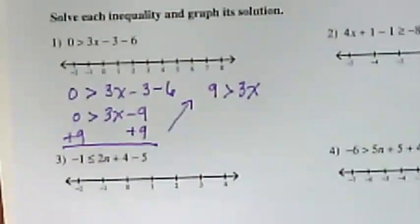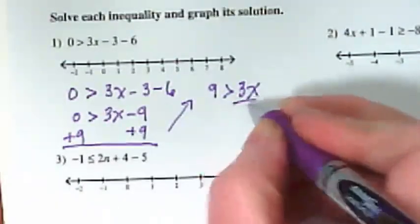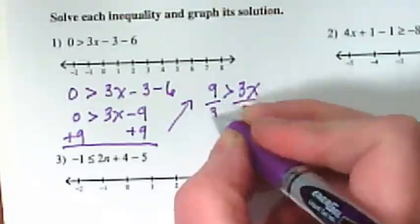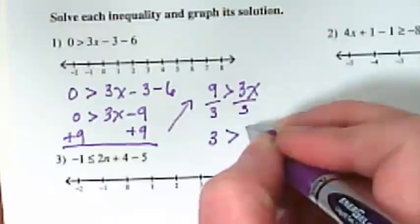So step six, cancel the coefficient. The number that's in front or under the variable using multiplication or division. This is where we're trying to make our positive invisible one. So what do we need to get rid of here to cancel? And we're going to do it by dividing both sides by three. And I end up with 3 is greater than x.